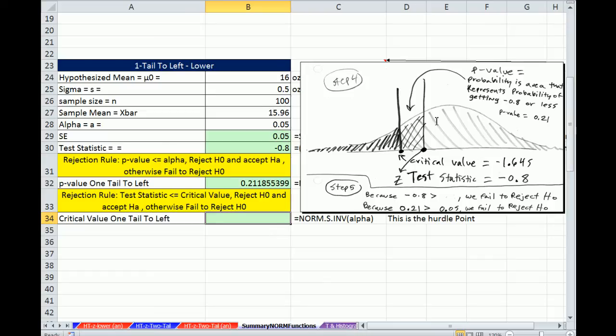Critical value. Here's our critical value. That's the hurdle point. Anything below for a lower left test, any test statistic below, then we reject.